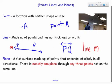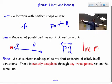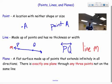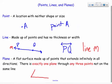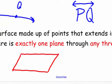For planes — a plane is a flat surface made up of points that extends infinitely in all directions. For example, the floor is a plane. If it just kept going, it would extend infinitely in all directions. The ceiling is a separate plane. There is exactly one plane through any three points not on the same line.